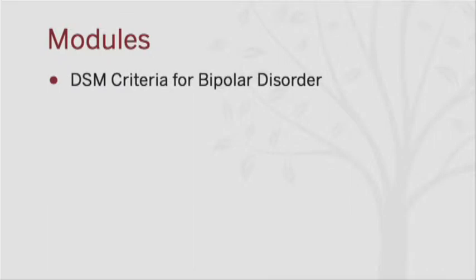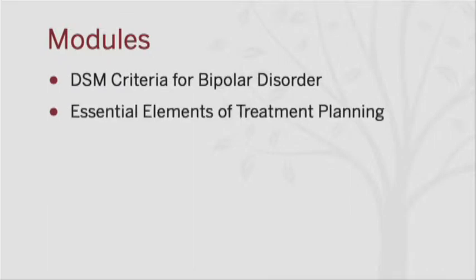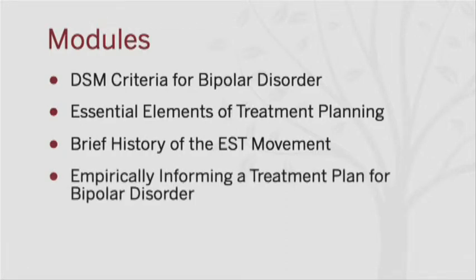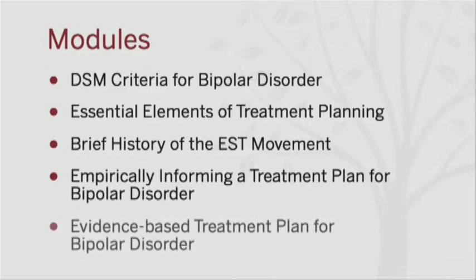This program is broken into a number of modules. In it, we'll describe the DSM criteria for bipolar disorder, discuss the essential elements of the treatment planning process, provide a brief history of the movement to identify empirically supported treatments, or ESTs, as well as other sources of evidence-based practice or practice guidelines. We'll then show how to empirically inform a treatment plan with findings from this literature. Lastly, we'll present an example of an evidence-based treatment plan for bipolar disorder.